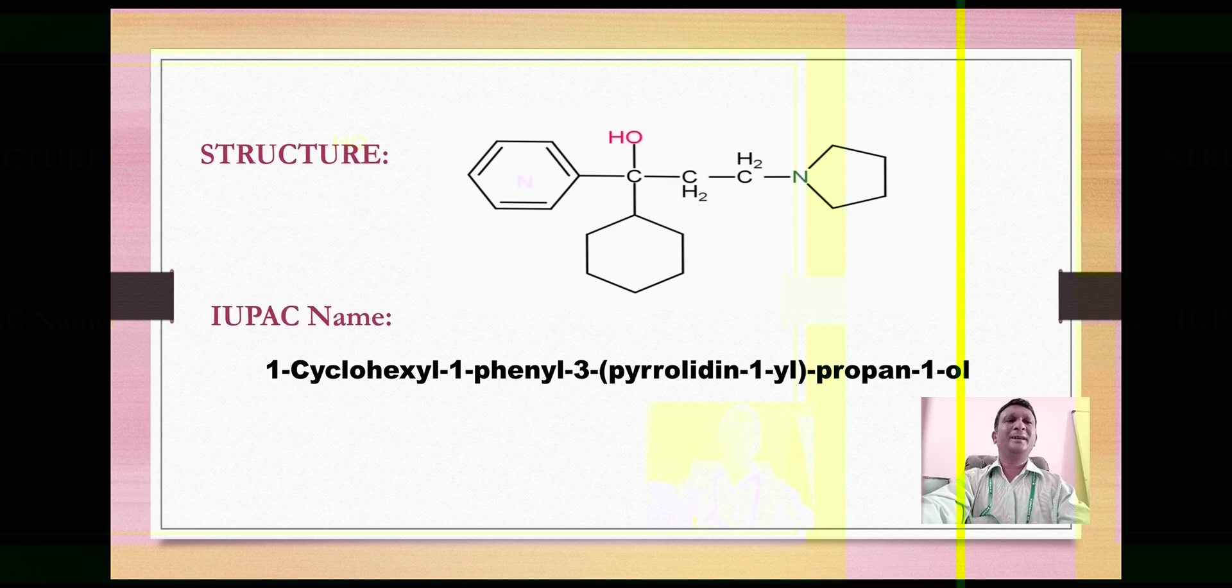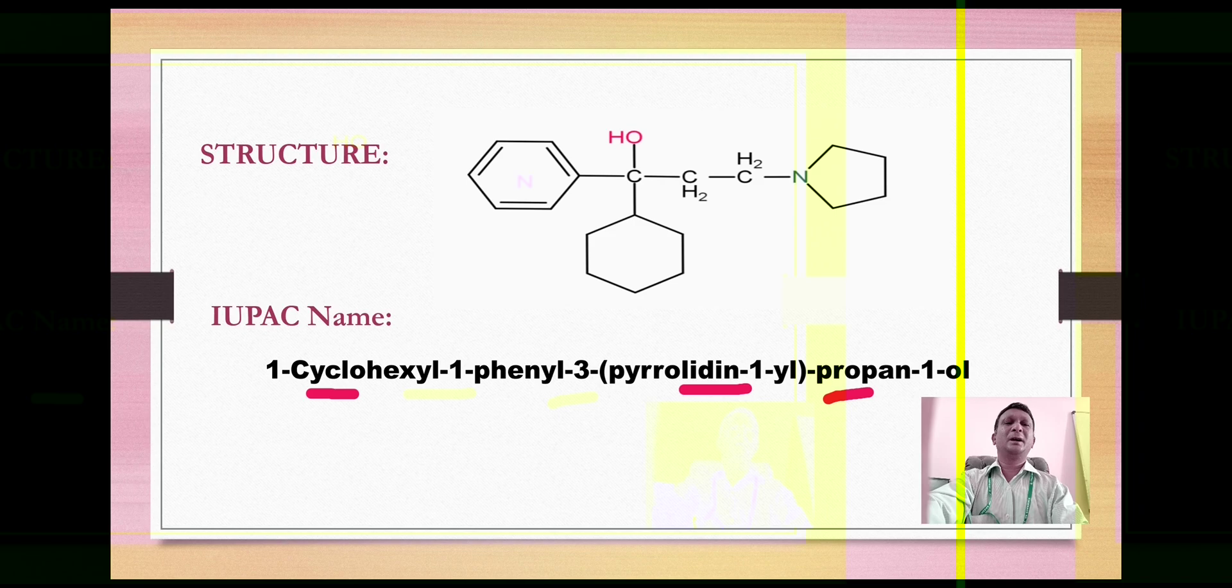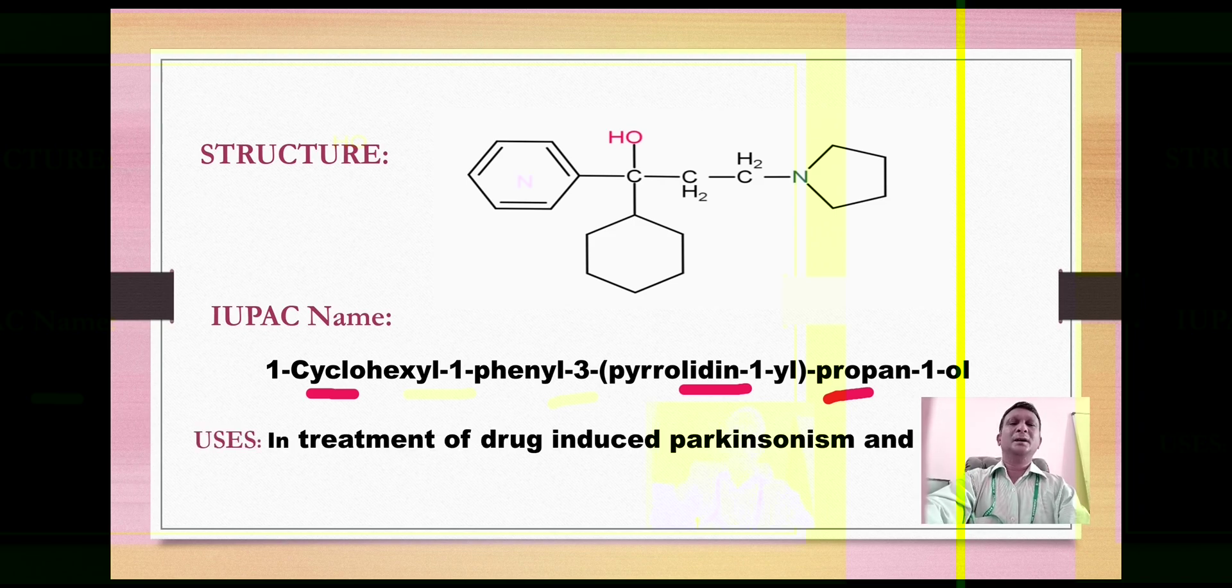Now let's look at how it is derived: from propane we have 'pro', from cyclohexyl 'cycl', and from pyrrolidine we have 'idine', so that's why it becomes procyclidine. This compound found its use in treatment of drug-induced parkinsonism and akathisia.